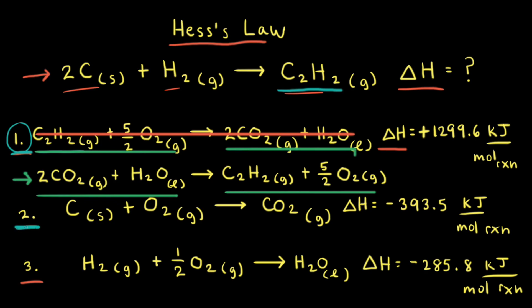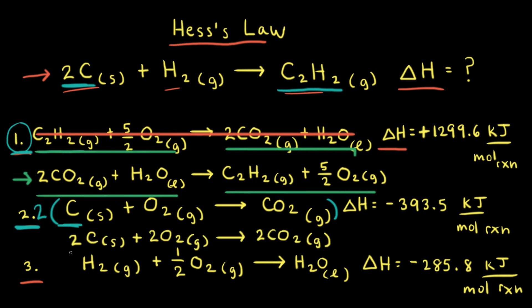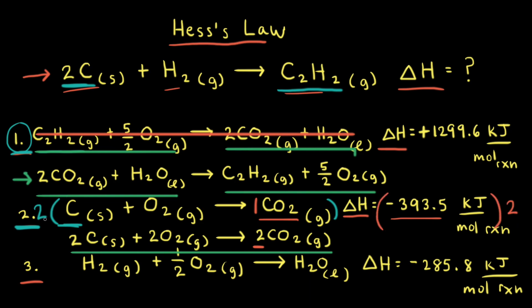Next, we look at equation two and compare it to our original. For equation two, there's one mole of solid carbon on the left side, but looking at our original reaction, there are two moles of carbon on the left side. So to get equation two to look like our original, we need to multiply everything through by a factor of two. Doing that gives us two carbons plus two O₂ goes to two CO₂. Since the enthalpy for forming one mole of CO₂ was negative 393.5 kJ/mol, and now we're forming two moles, we multiply the enthalpy by two as well. Let's cross out the original version since we're now forming two moles of CO₂.